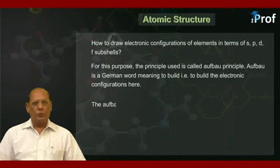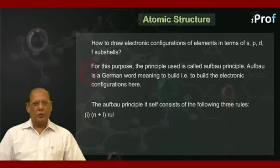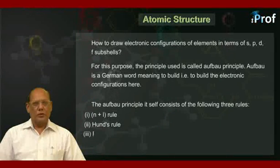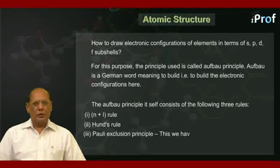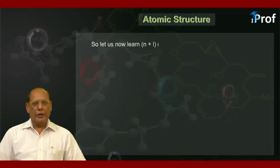The Aufbau principle itself consists of the following three rules. Number one, n plus l rule. Second, Hund's rule. Third, Pauli exclusion principle. This we have already learned. So let us now learn n plus l rule.